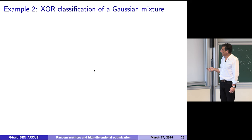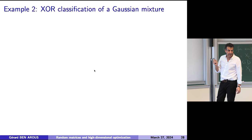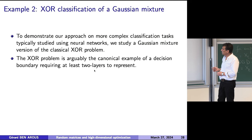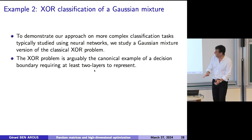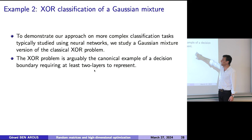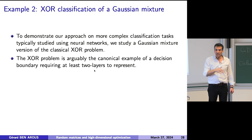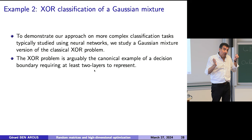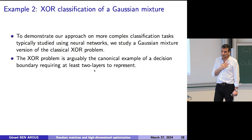Let me give a new example: the XOR classification of a Gaussian mixture. This problem created what is called the second winter of AI. It is the canonical example of a decision boundary problem requiring at least two layers. Why did this create problems in the 90s? Up to then, everybody was using one-layer things like the perceptron. This problem is not solvable with one layer — you need two. And that's why things were stuck until somebody said, why don't we use two layers? That started the multi-layer industry of machine learning.